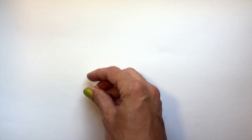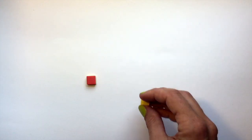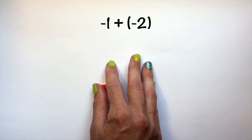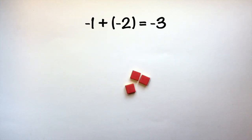We can do the same with negative integers. Negative 1 plus negative 2 equals negative 3 because there are three negative 1 tiles.